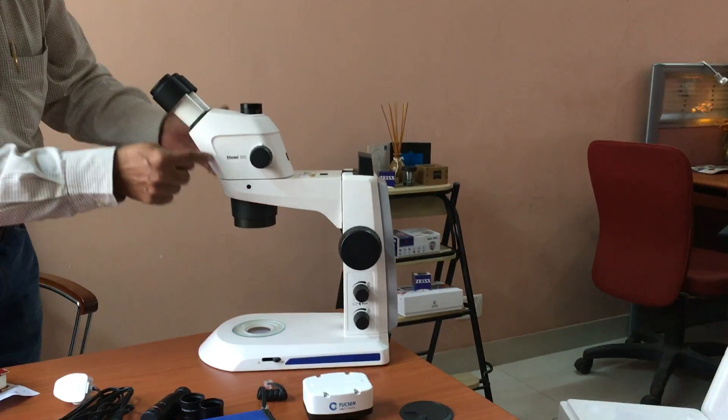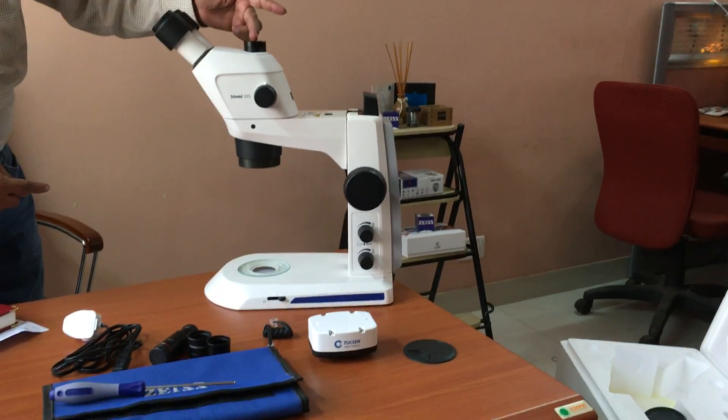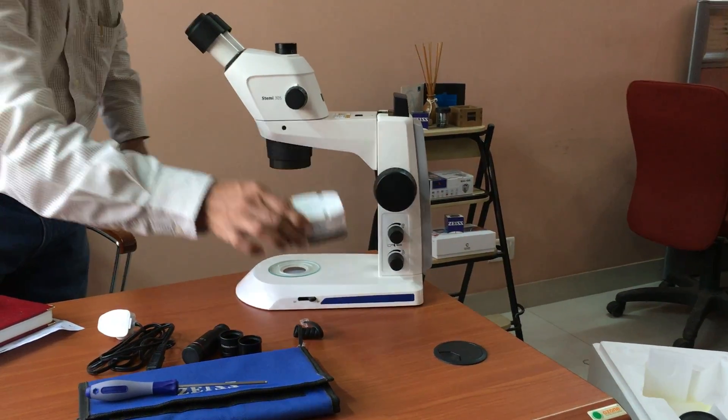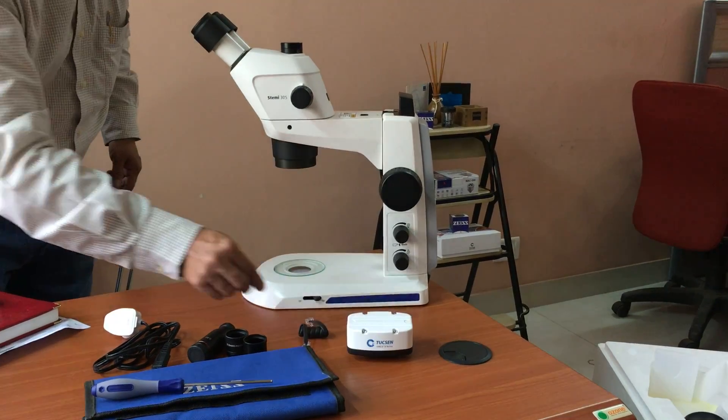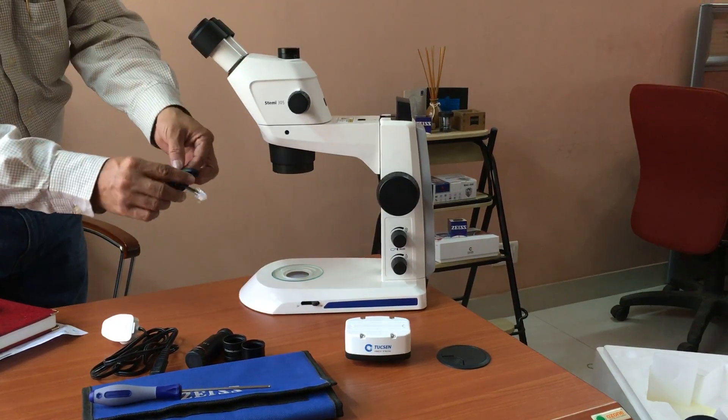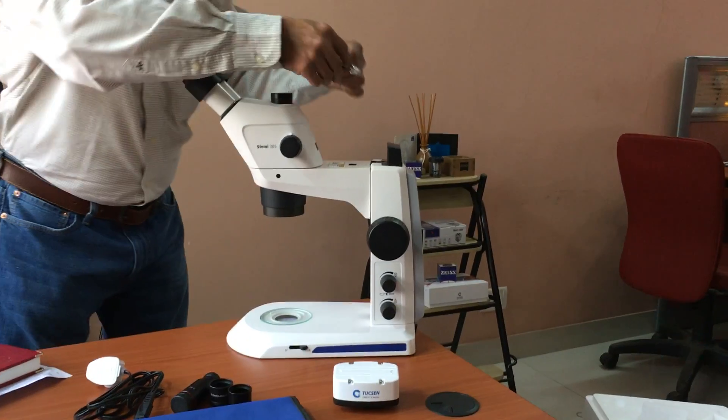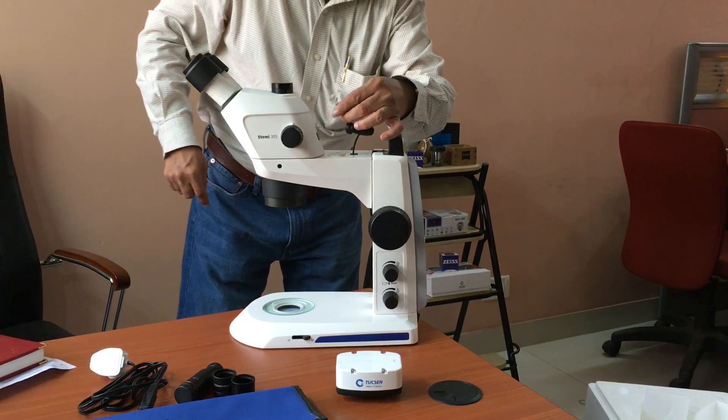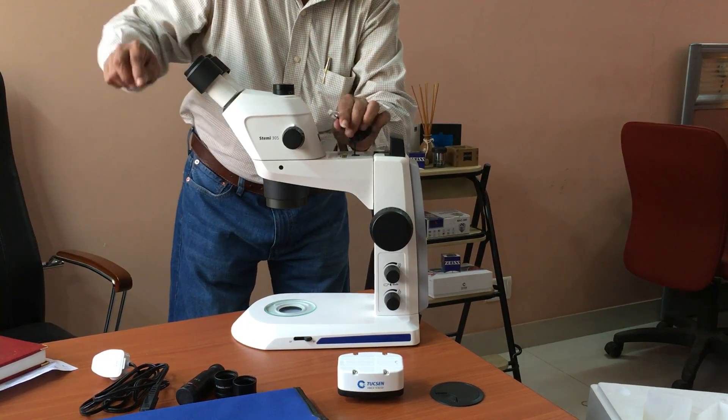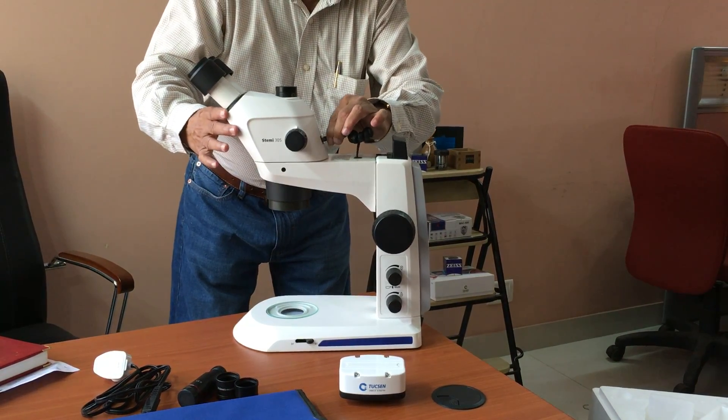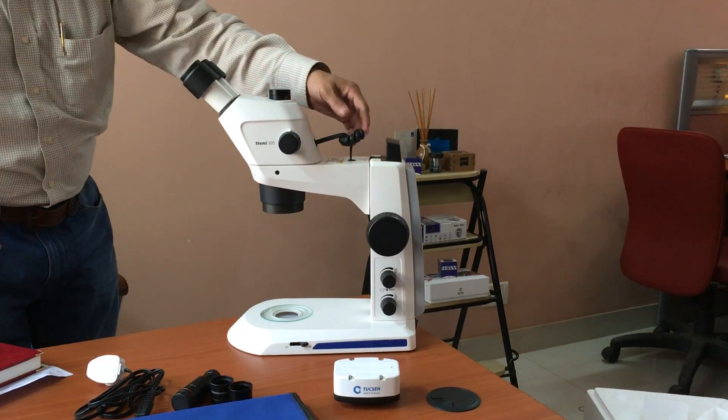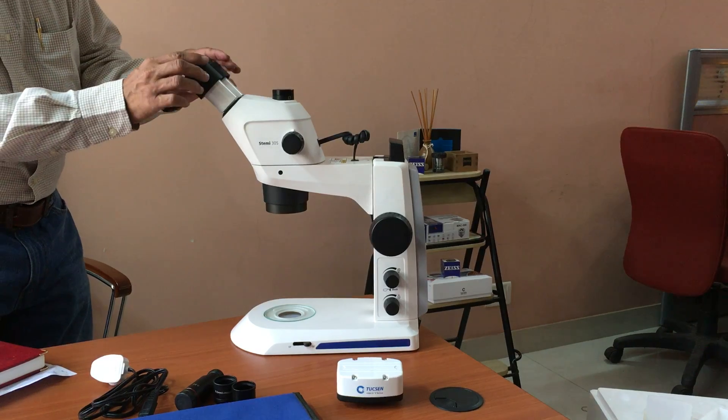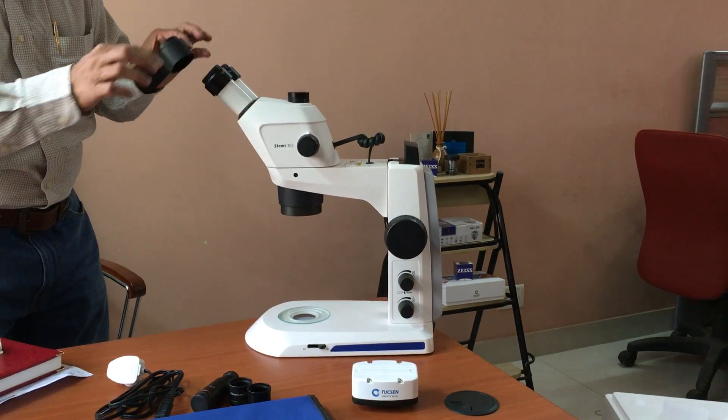This is the microscope body. A trinacular port for connecting digital camera. Before that we connect the LED source cable, one for here and the other this is the light connection. This is the trinacular port. Remove the caps on the eyepieces.